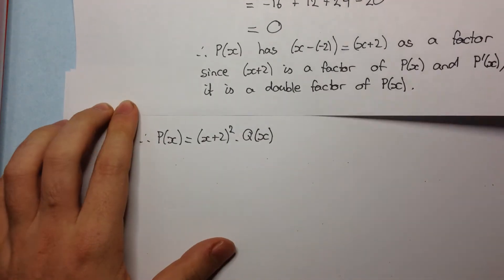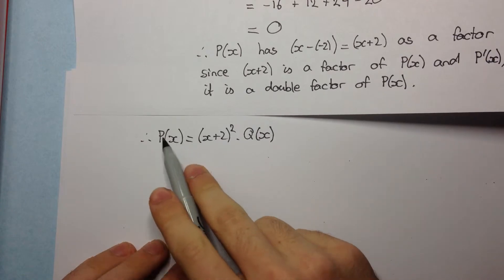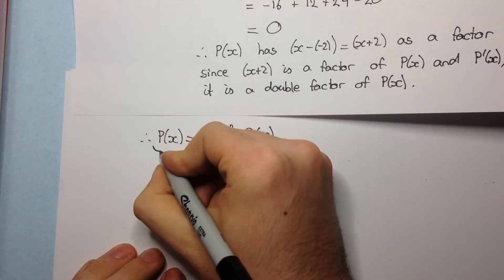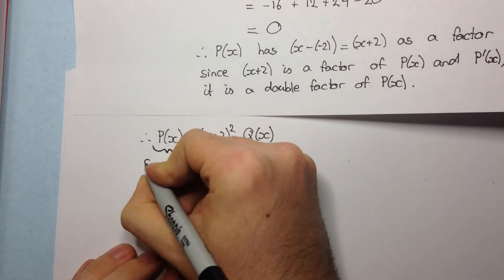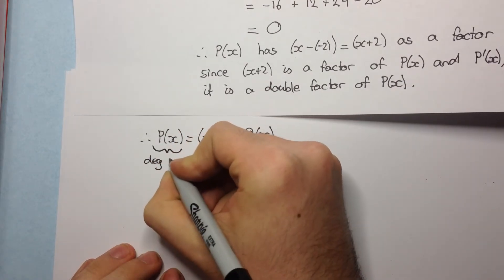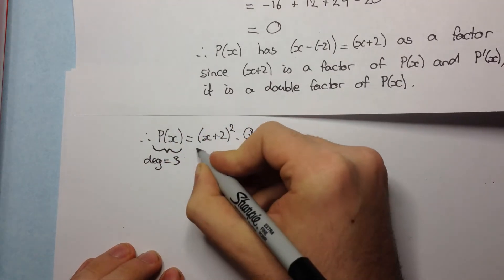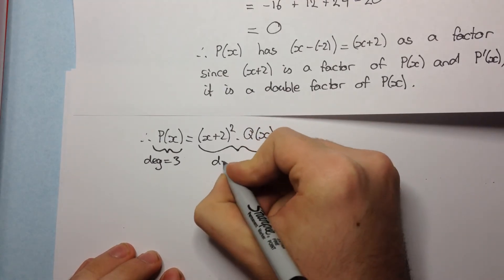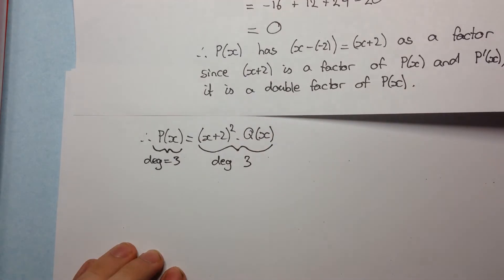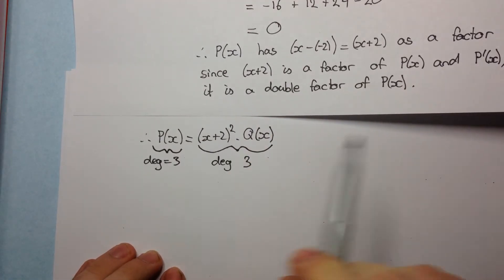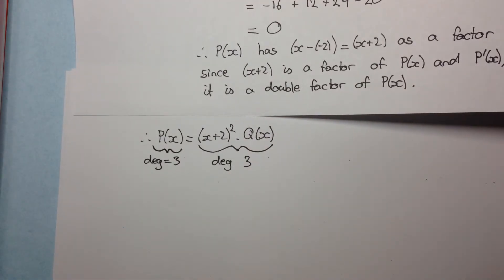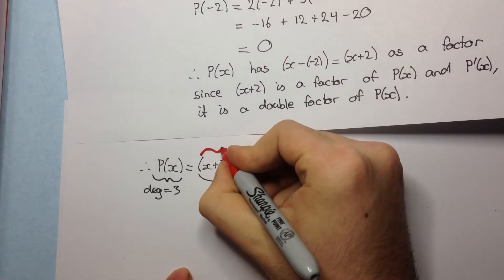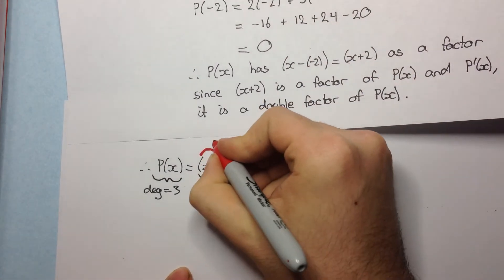And so here, if this side here has a degree of 3, then this side also needs to have a degree of 3. Now if we look at just (x + 2)², this has a degree of 2.